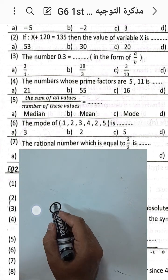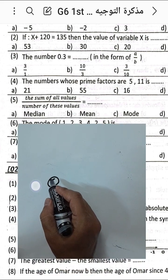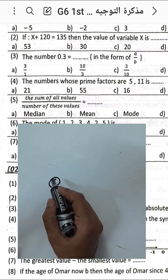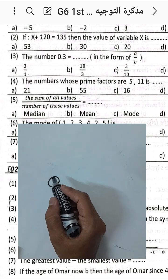Question number five: the sum of all values divided by the number of these values — we use the mean.